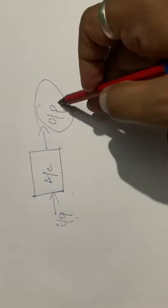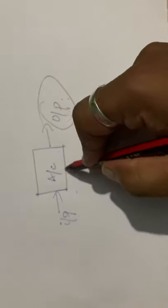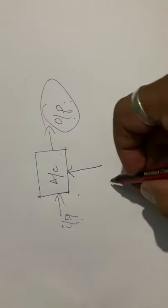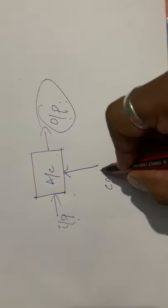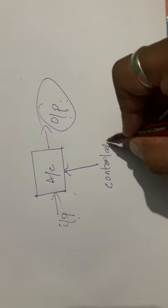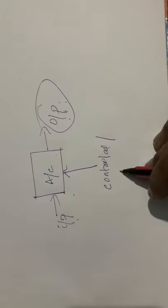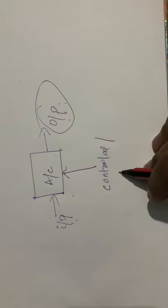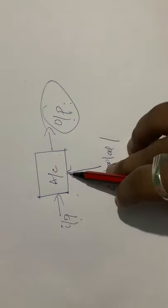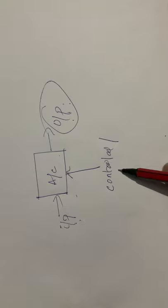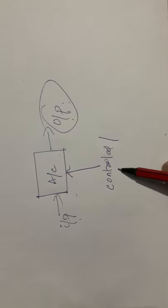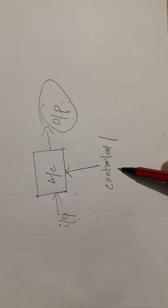A process is nothing but you'll be having some input and you'll perform some activity to get the desired output, but this will be mainly handled or clearly monitored. We can say this has to be controlled mainly. There will be some activity or some parameters which will be controlling your activity.